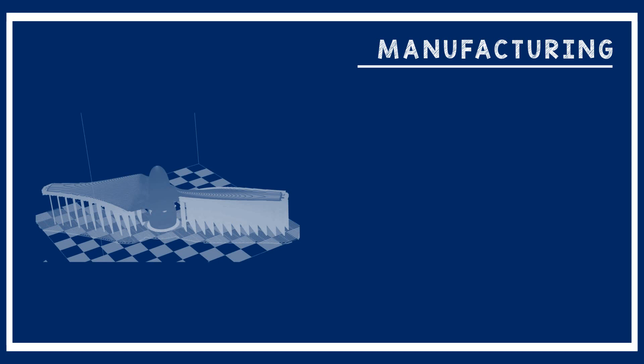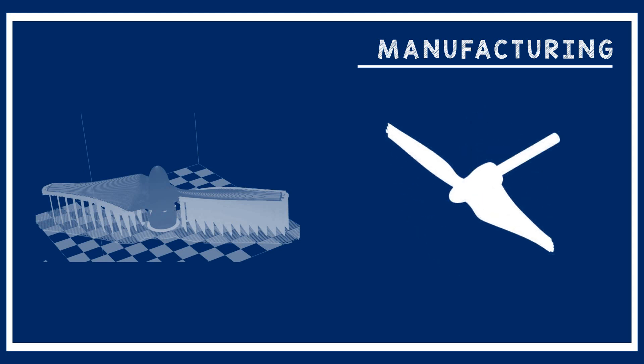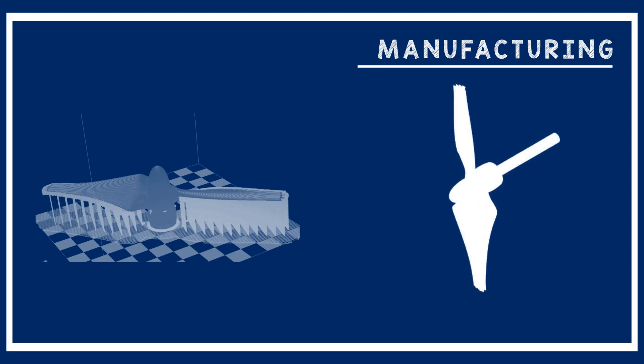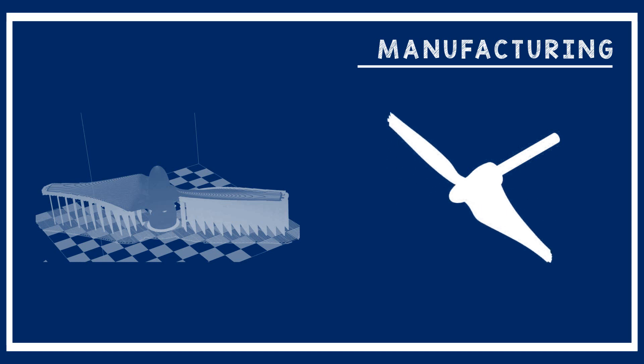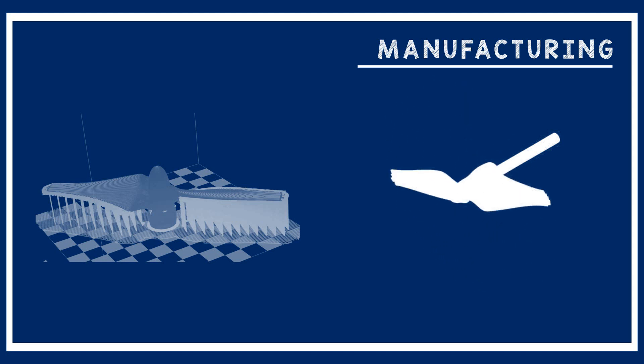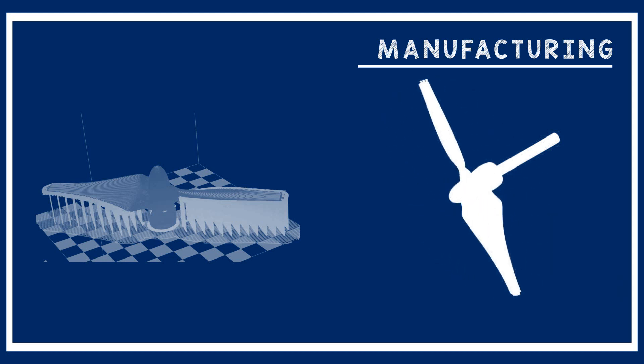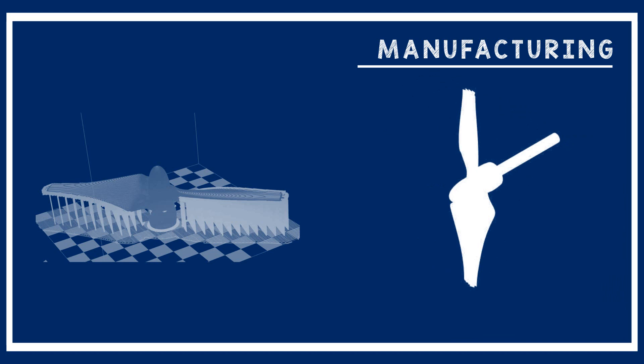3D printed objects typically have a rough surface finish. Aerodynamically, it is very important to reduce surface roughness to minimize drag. To do this, we used different grades of sandpaper to smooth the surface, ensuring we never sanded in just one direction — which would create scratches — but instead used circular motions so the surface would not have a recognizable pattern.